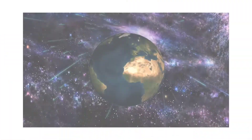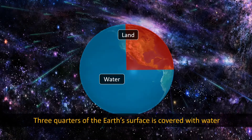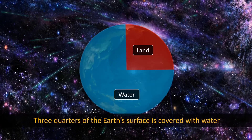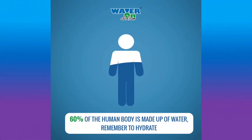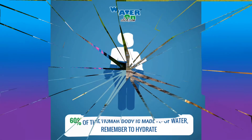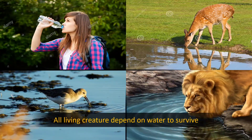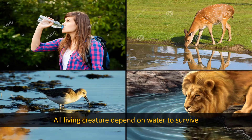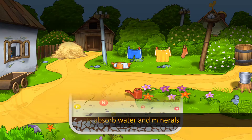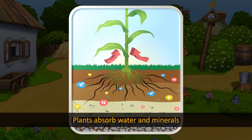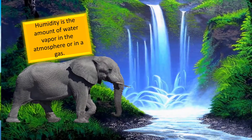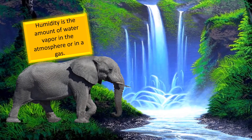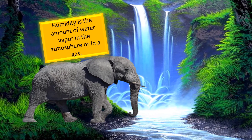Water. Three quarters of the Earth's surface is covered with water while only one quarter is land. Almost 60% of the human body is made up of water. All living creatures depend on water to survive. Plants absorb water and minerals to make food and to grow. Water vapor in the atmosphere brings precipitation. Humidity is the amount of water vapor present in the atmosphere or in a gas.